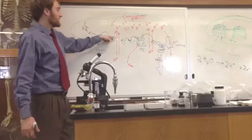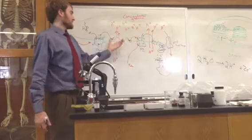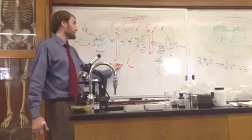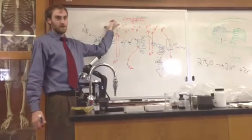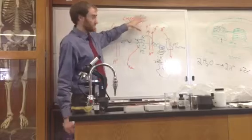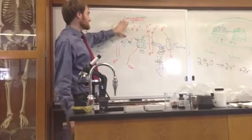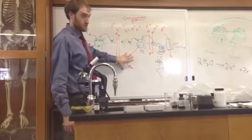As this electron bounces from protein to protein, the proteins use that energy to pump hydrogen ions into the lumen of the thylakoid. This creates our concentration gradient. We have a lot of protons, or hydrogen ions, inside—a lot more than outside in the stroma.